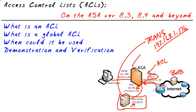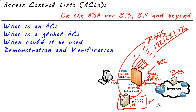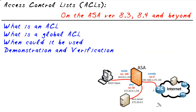Now, what happens if we have five or six new interfaces, and we have users on all of these interfaces that also want to come in? We'd have to create five or six more access lists — one for each interface. Instead of creating additional access lists for every single interface, if we have a common need of allowing port 80 to this web server, we could use something called a global ACL.